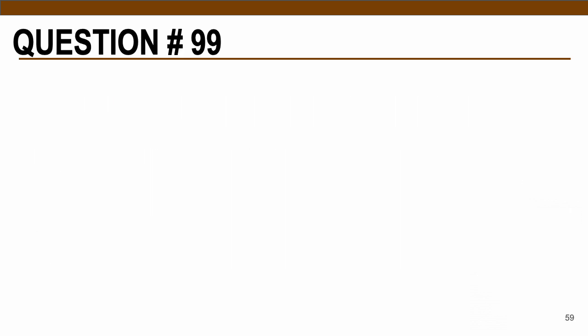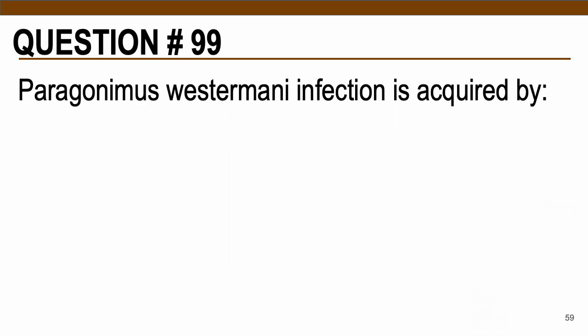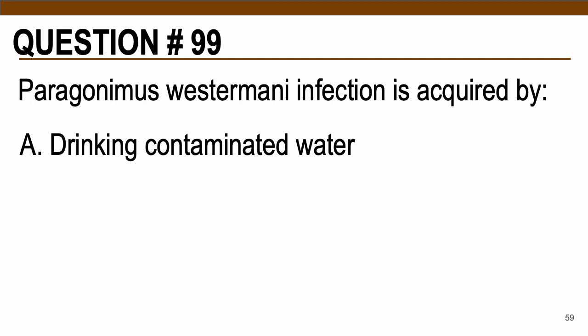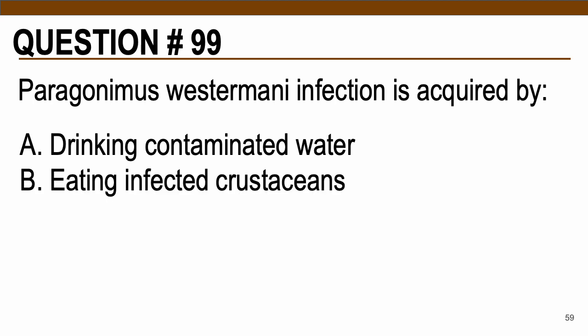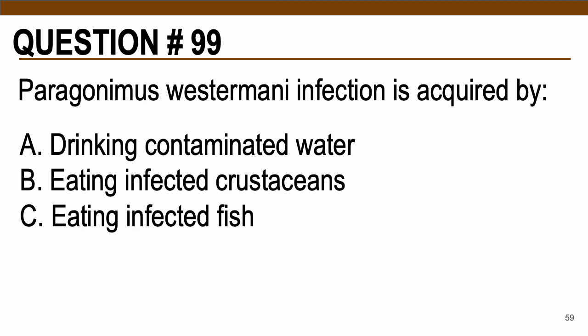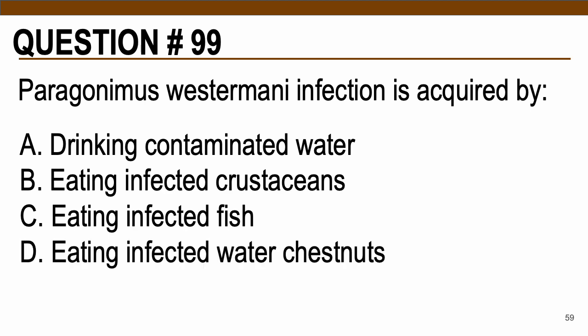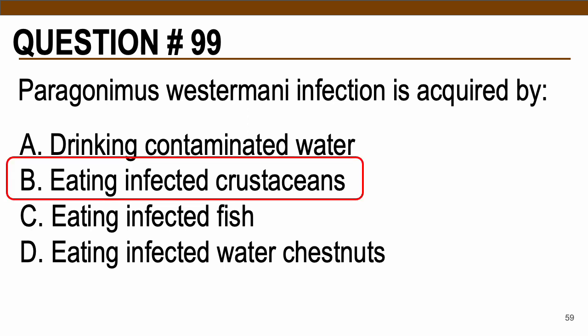Question number 99: Paragonimus westermani infection is acquired by — A, drinking contaminated water; B, eating infected crustaceans; C, eating infected fish; D, eating infected water chestnuts. The correct answer is letter B, eating infected crustaceans such as crab.